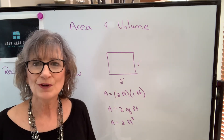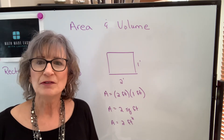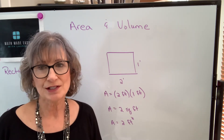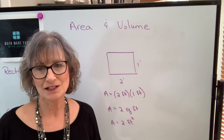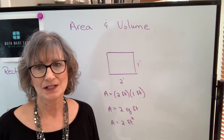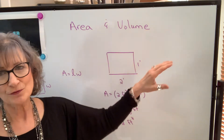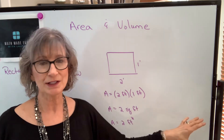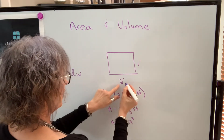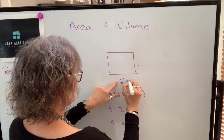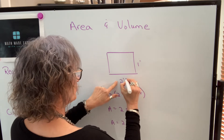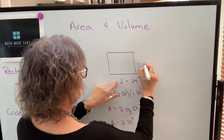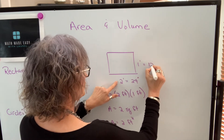We could also find the area in square inches, but be very careful how you change from square feet to square inches — it's not the same as changing feet to inches. Let's change our units to inches first and find the area, and then we'll talk about how we change the area units. I could change these dimensions to inches before I start, so two feet multiplied by 12 is 24 inches. One foot is 12 inches.